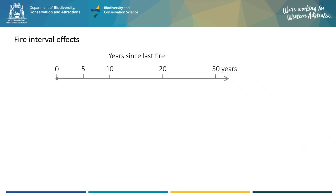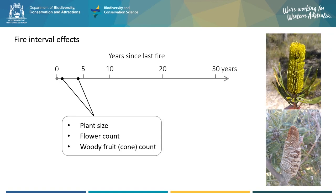Some of my PhD research looked at the issue of fire interval effects in detail. Studying fire intervals directly can be a challenge because it can be logistically difficult to impose particular fire regimes on the landscape. Instead, I took an approach to study how populations change with increasing times since fire, which can give us an idea of how they might respond to different fire intervals. I selected sites with different times since fire and recorded plant sizes, flower counts, and for the serotinous species — those with canopy seed banks — I also recorded woody fruit and cone counts. These measurements allowed me to build a picture of how populations might change in the absence of fire.